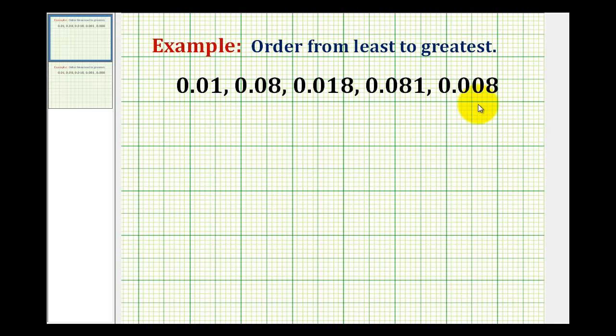We want to order the following decimals from least to greatest. This can be a little bit challenging when the decimals have a different number of digits to the right of the decimal. So we're going to rewrite this list vertically and line up the place values.